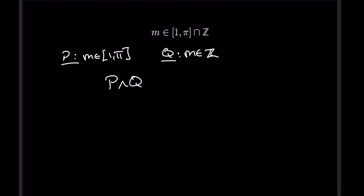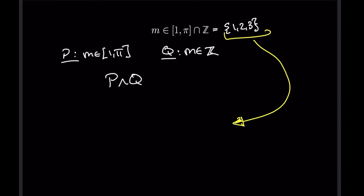We can also note that the set [1, π] ∩ ℤ is just {1, 2, 3}, since π is between 3 and 4. That gives us another way to write this after uncovering that equivalency: without defining named statements, we can just write m = 1 ∨ m = 2 ∨ m = 3. So there are two approaches — one straightforward from the sentence, one from simplifying the set.